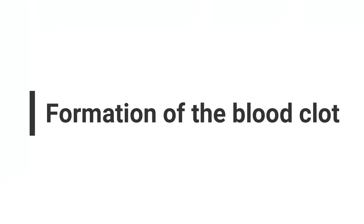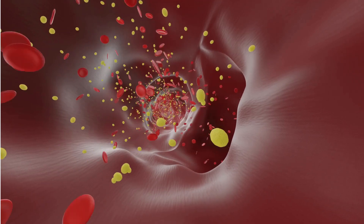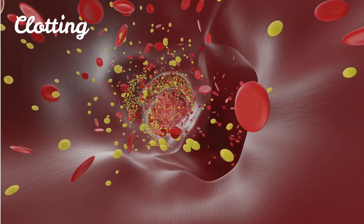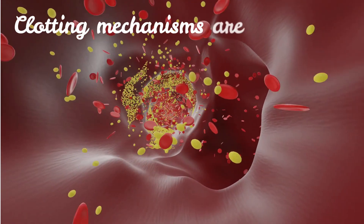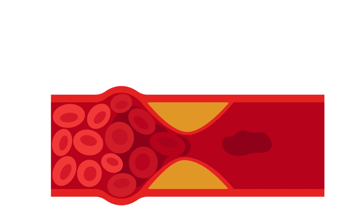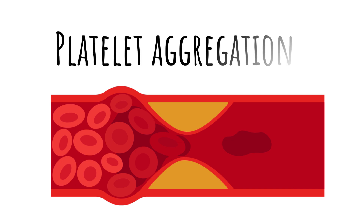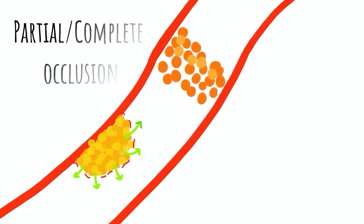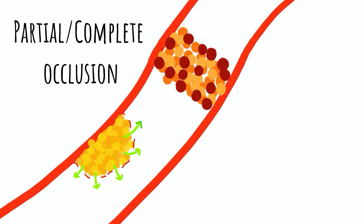Number three: formation of the blood clot. In response to the plaque rupture, the body's natural clotting mechanism is activated. Platelets in the blood start to aggregate at the site of rupture, forming a blood clot or thrombus. This clot can partially or completely block the artery.